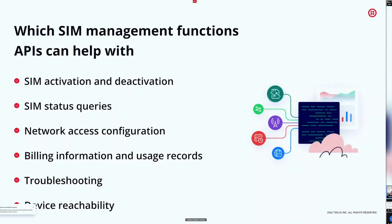Network access configuration is another key function. You want to control which networks and countries your devices have access to. You might want to change a network access profile for a SIM or an entire SIM fleet, or pull what the current network access profile is — all managed through APIs.